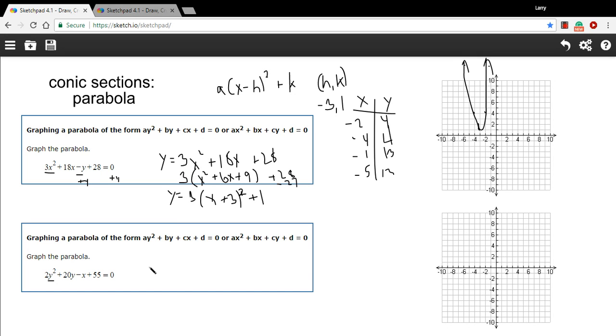Now when we graph a sideways parabola, there are a couple of little differences. First of all, as I said, we're going to solve for x. So I'm going to add x to both sides and I get x = -2y² - 20y + 55.